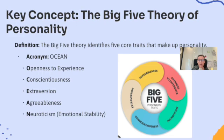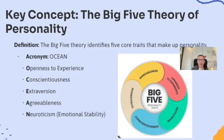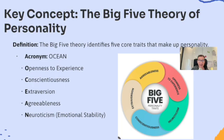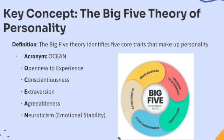The second trait is conscientiousness. This trait measures how organized, responsible, and dependable a person is. For example, a conscientious person meets deadlines, plans tasks effectively, and keeps their workspace tidy. Someone low in conscientiousness might procrastinate or struggle with organization.